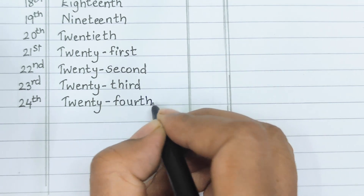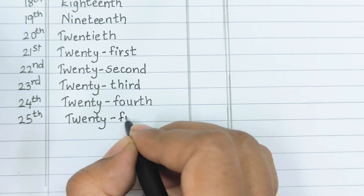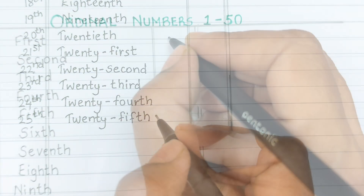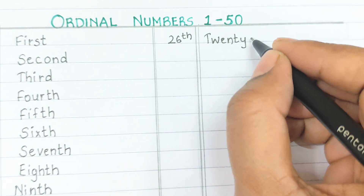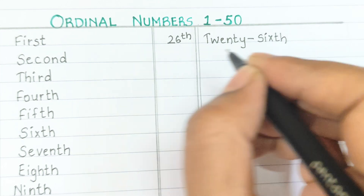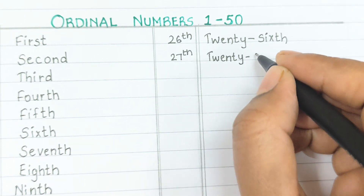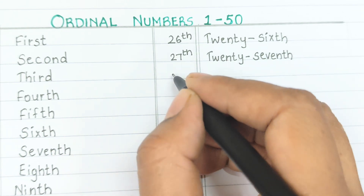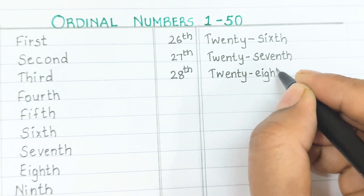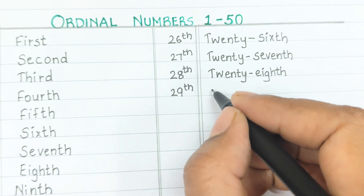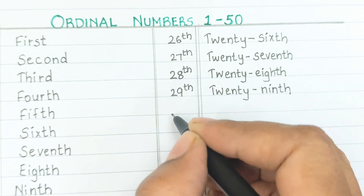Twenty-fourth: T-W-E-N-T-Y-F-O-U-R-T-H. Twenty-fifth: T-W-E-N-T-Y-F-I-F-T-H. Twenty-sixth: T-W-E-N-T-Y-S-I-X-T-H. Twenty-seventh: T-W-E-N-T-Y-S-E-V-E-N-T-H. Twenty-eighth: T-W-E-N-T-Y-E-I-G-H-T-H. Twenty-ninth: T-W-E-N-T-Y-N-I-N-T-H.